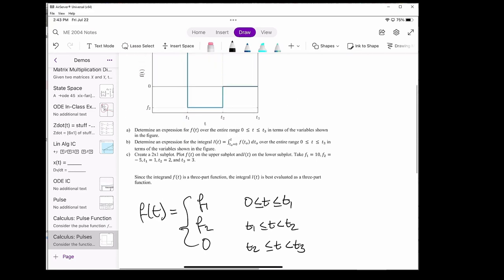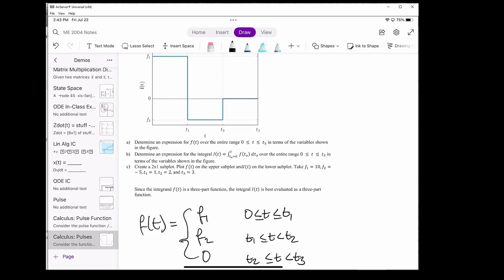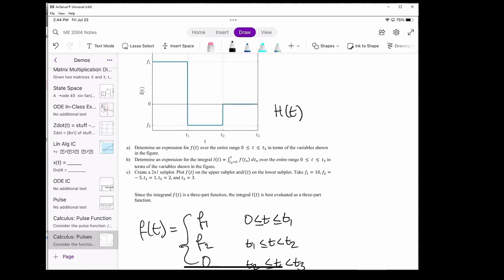Whenever we have a multi-part function like f of t, I try to write it in terms of the unit step function h of t. Recall that h of t equals 0 if its argument is negative, and 1 if its argument is 0 or positive. We can use the unit step function to help us decide when to turn on or off the individual components of f of t.